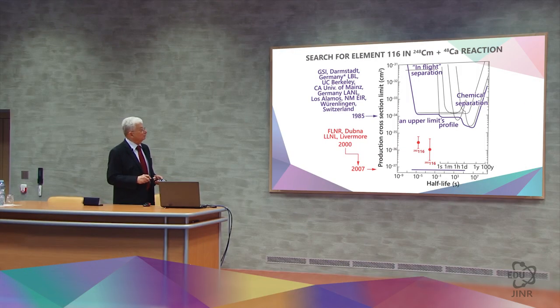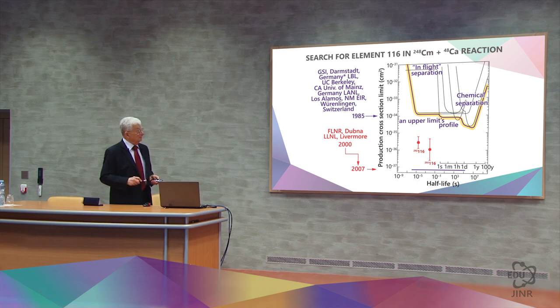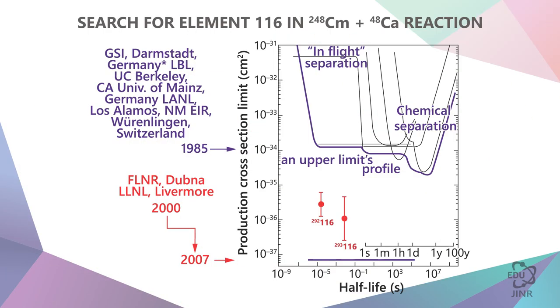We will now compare our results with those obtained in 1985. When the upper limits of the sensitivity level were obtained, we managed to improve the sensitivity of the experiment by about 1,000 times, by three orders of magnitude. And essentially we redid everything.